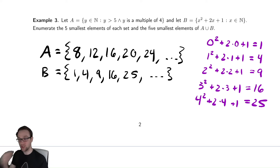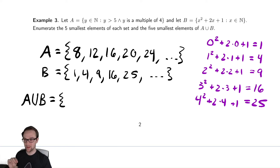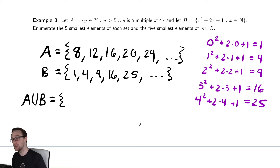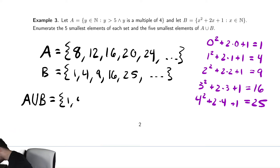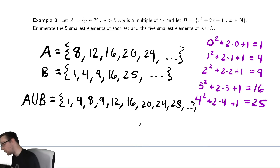And then we want to find the union of those — A union B. Remember that the order of the set doesn't actually matter, but we were asked for the 5 smallest elements. So I'm going to look at these and count them off. The smallest element between either of them is 1, then 4, then 8, then 9, then 12, then 16 — which is in both — then 20, then 24, then 25, and so on.